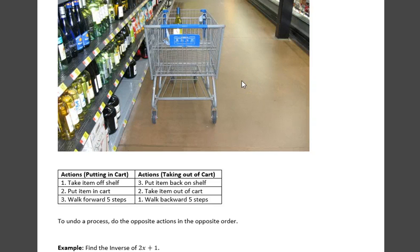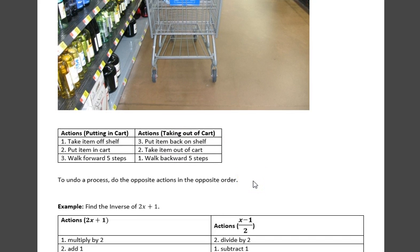So, how do you undo it? Look here, if we take step three here, walk forward five steps, and make that step one of taking it out of the cart, we have to walk backwards five steps. Step two, we have to do the opposite. Instead of putting the item in the cart, we have to take the item out of the cart, and instead of taking the item off the shelf, we put the item back on the shelf.